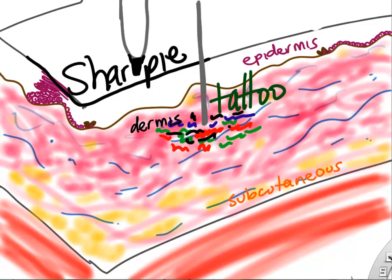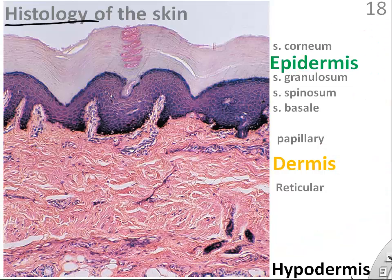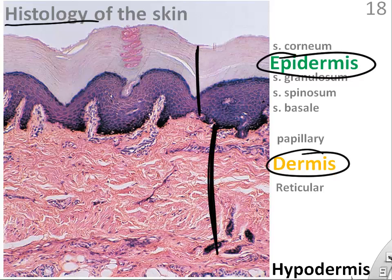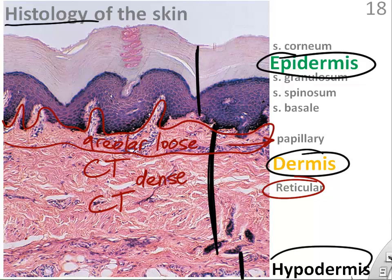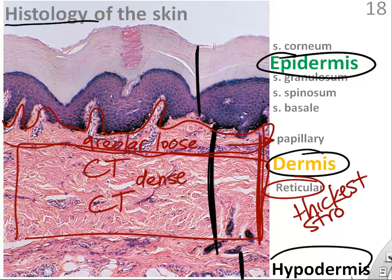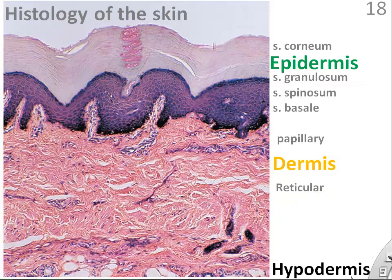If we look at histology of the skin, you see the outer epidermis layer, the thick dermis layer, and then the underlying hypodermis. Remember, most of that is connective tissue — most of our skin is connective tissue. The top part of the dermis is a little more loose connective tissue, while the middle of the dermis is very dense, packed with collagen and elastin. That's the thickest and strongest layer of the dermis.